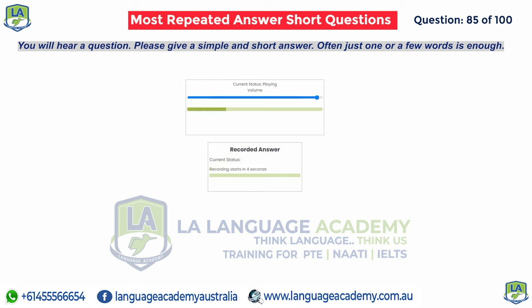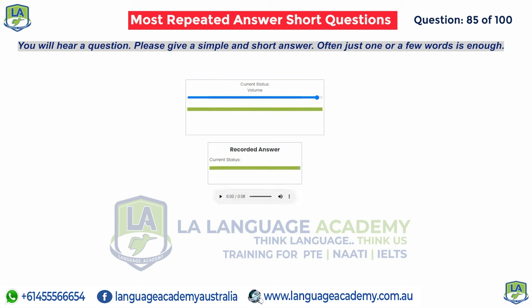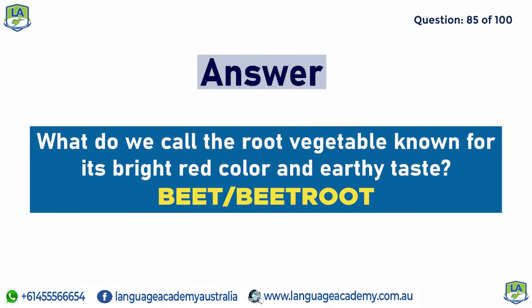What do we call the root vegetable known for its bright red color and earthy taste? Beet.